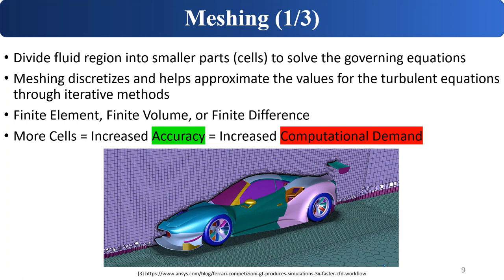Meshing is when you divide a fluid region into smaller parts or cells to solve the governing equations at each point in space. Meshing helps discretize and approximate the values of the turbulent equations through iterative methods, and this is really the only way we can economically perform CFD simulations. It's theoretically possible to directly solve the Navier-Stokes equations on turbulent scales — known as Direct Numerical Simulation (DNS) — however, the computational demand is out of scope for most computers today and is only used in academia.